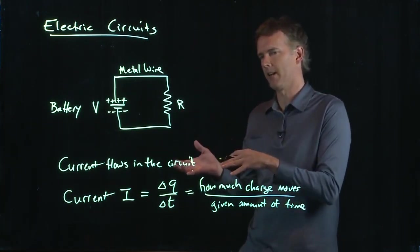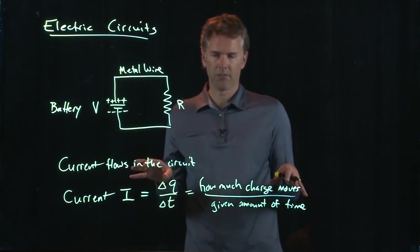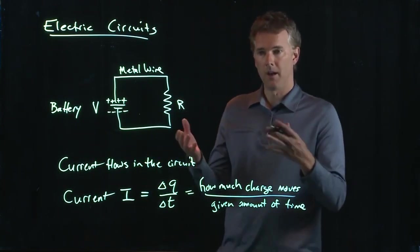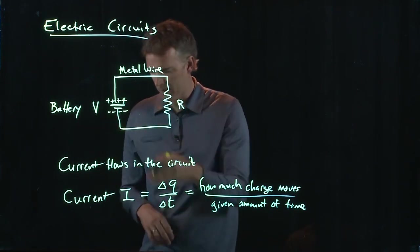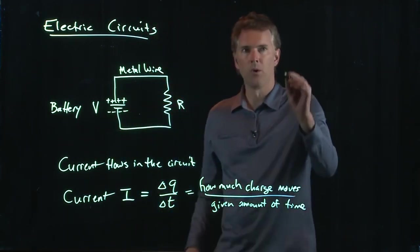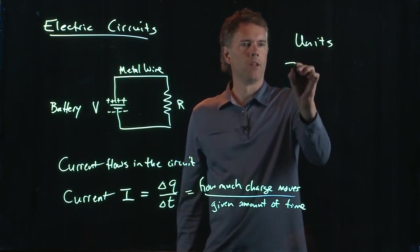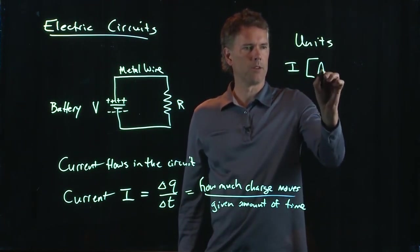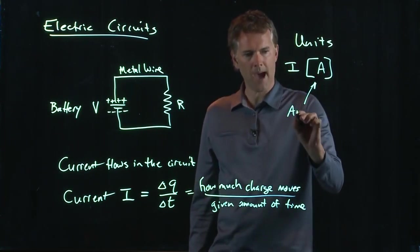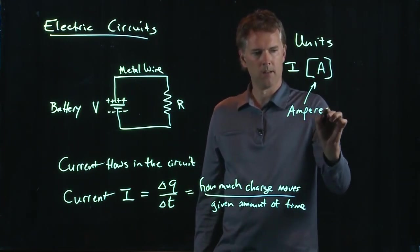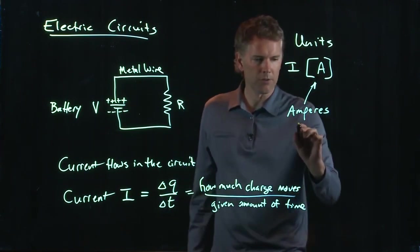Okay, so before we were always talking about statics, right? Nothing was moving. Now we have movement of charge. Charge is moving around in the circuit. What are the units on current? The units on current are amperes, and we write it with a capital A. You can also say amps.